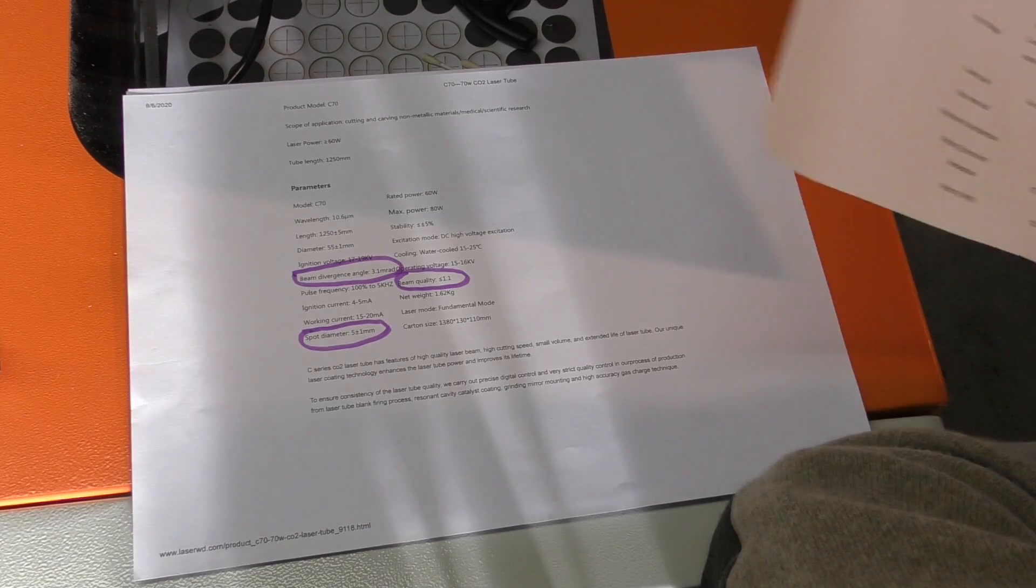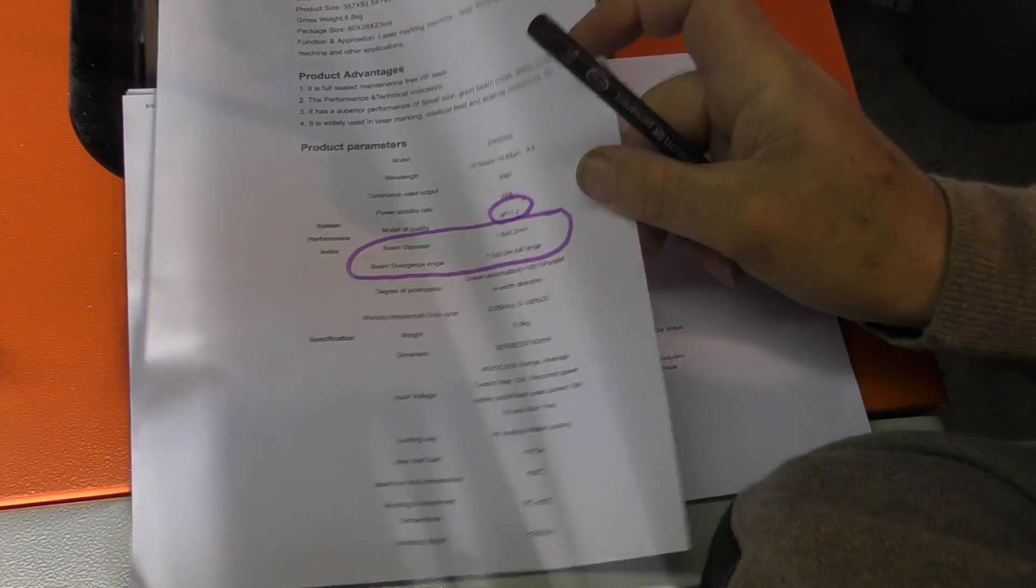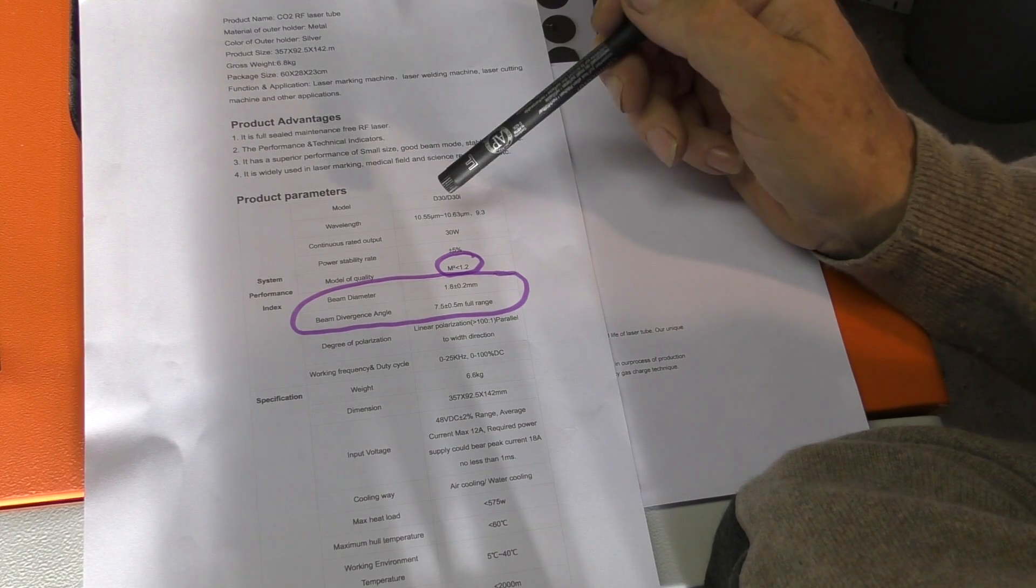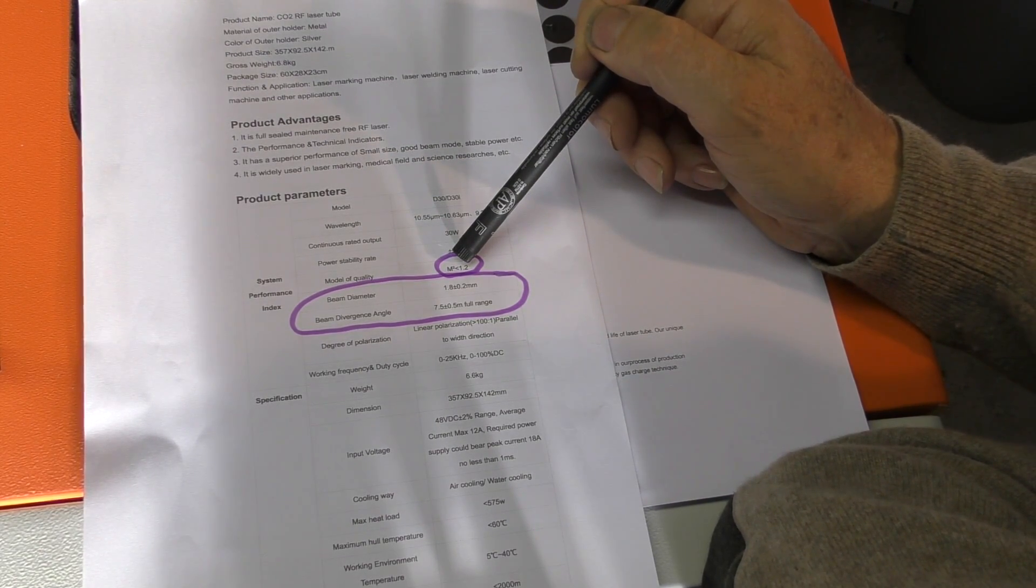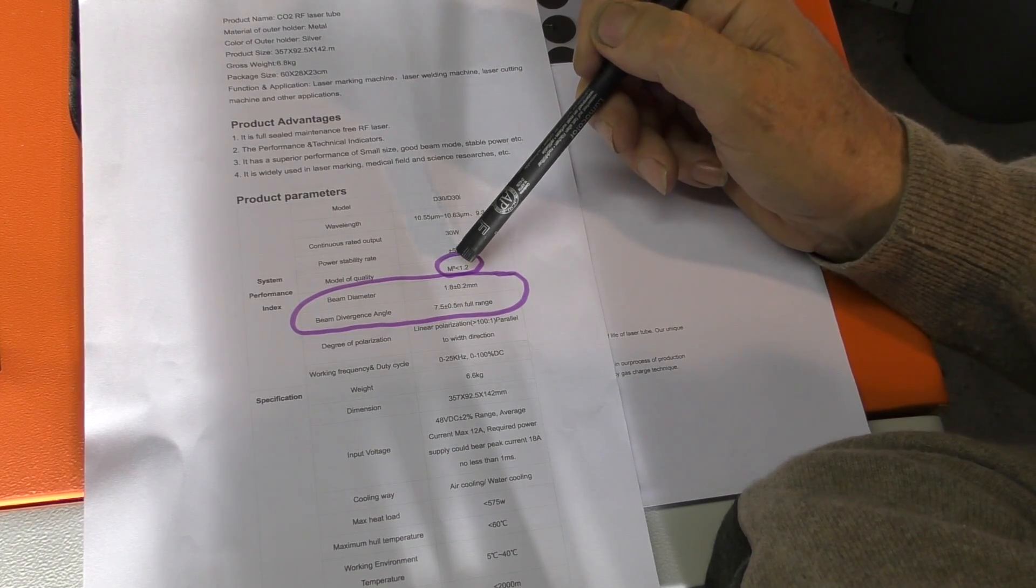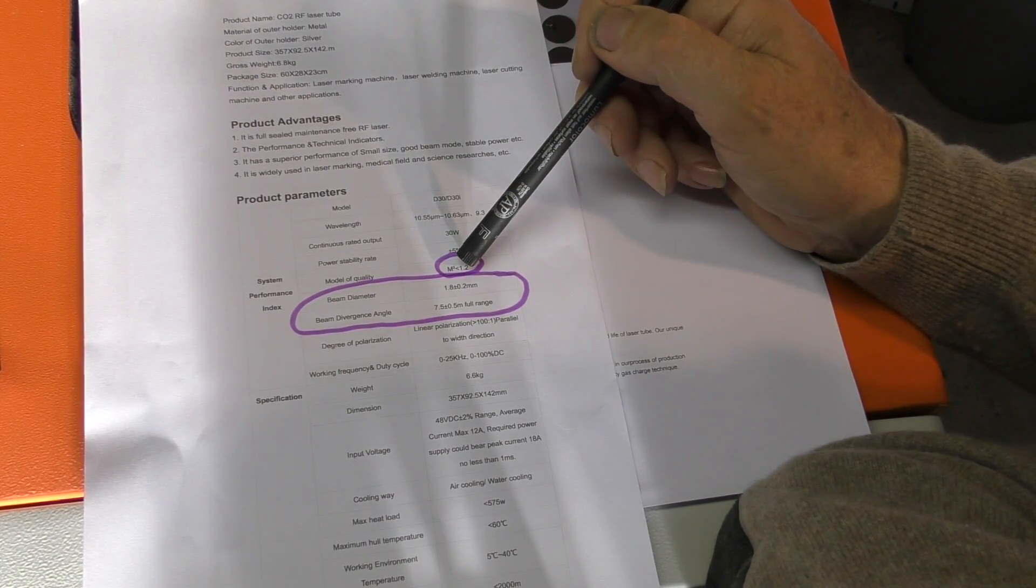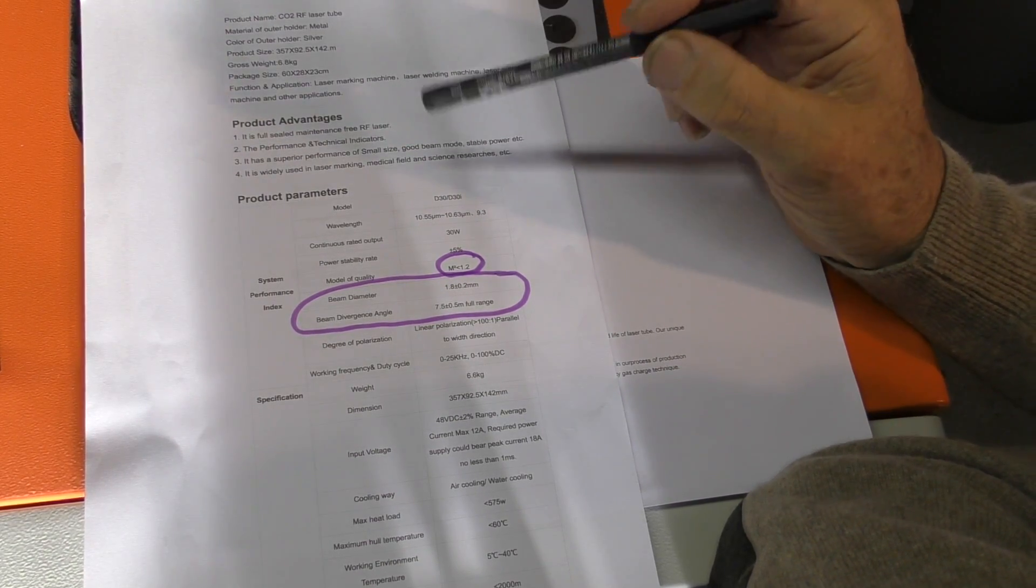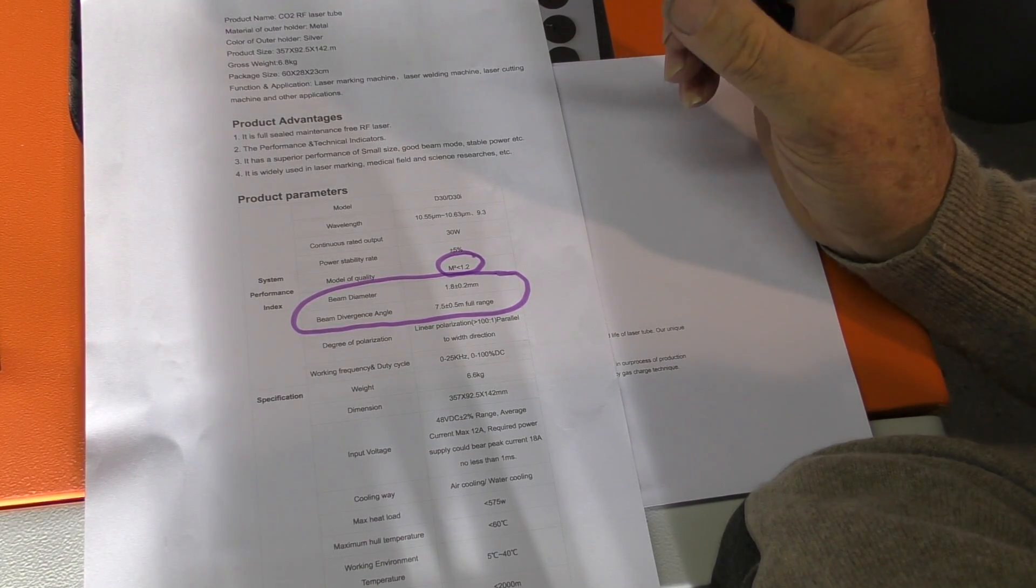Then I start looking around at what this RF laser is capable of doing, and I find several rather interesting facts. First of all, the beam quality is not 1.1. The M squared beam quality is 1.2. It's not as close to a Gaussian distribution as our glass tube. The beam diameter is 1.8 plus or minus 0.2 of a millimeter, and let's just call it 2 millimeters for round numbers as it exits the RF laser window.